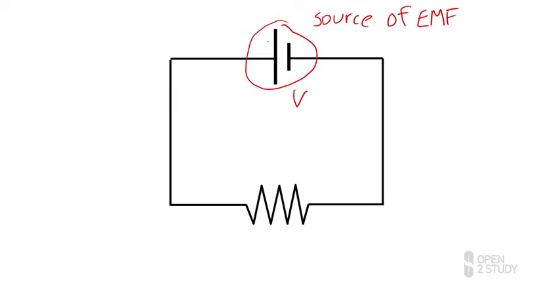Now, current will flow from the positive side of that, and the long line always indicates the positive side of the EMF source, and so current will flow from there around through the circuit. And remember, our electric current here has the symbol I.